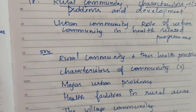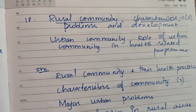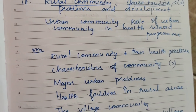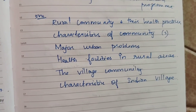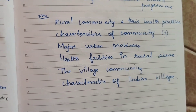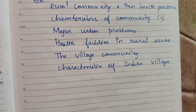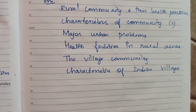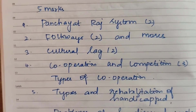Eighteenth question: Community. Rural community — characteristics, problems, and development — one 15-mark question. Rural community and its characteristics asked 2 times for 5 marks. Urban community and role of urban community in health-related programs — one 15-mark and 5-mark question. Rural community and their health practices, characteristics of community, major urban problems, health facilities in rural areas, village community, and characteristics of Indian village also covered.